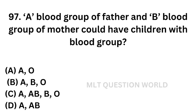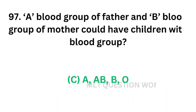Question number 97: A blood group of father and B blood group of mother could have children with blood group. Option A: A and O. Option B: A, B and O. Option C: A, AB, B and O. Option D: A and AB. As father is A and mother is B, there is the possibility of all blood groups for the offspring. So the correct answer is Option C: A, AB, B and O.